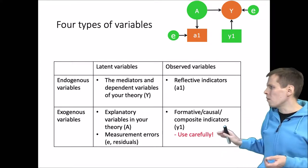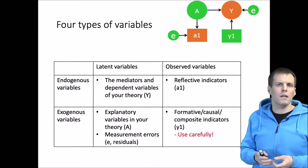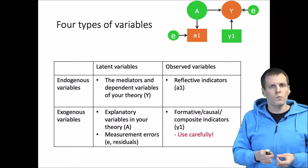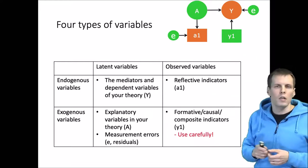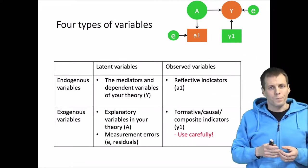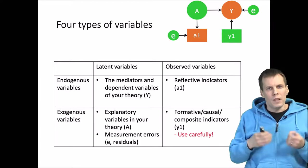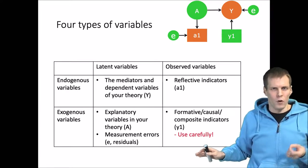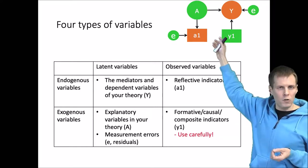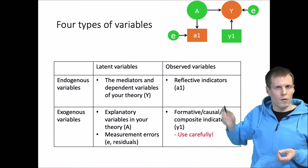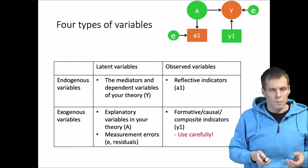We also have causal composite or formative indicators. These are often used problematically. When we use this kind of variable, such as y1, we assume there is no measurement error, which is difficult to justify. Another alternative for modeling no-measurement-error scenarios is to use a latent variable and simply fix the error variance to zero. These techniques will be addressed more in the videos that talk about measurement.